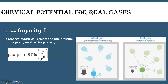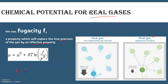Now, what is the chemical potential for real gases? For real gases we use the term fugacity F, the property which replaces the true pressure of the gas by an effective pressure. So the equation becomes μ = μ° + RT ln(F/P°), where for ideal gases we had P and here we have substituted P with F, the fugacity.